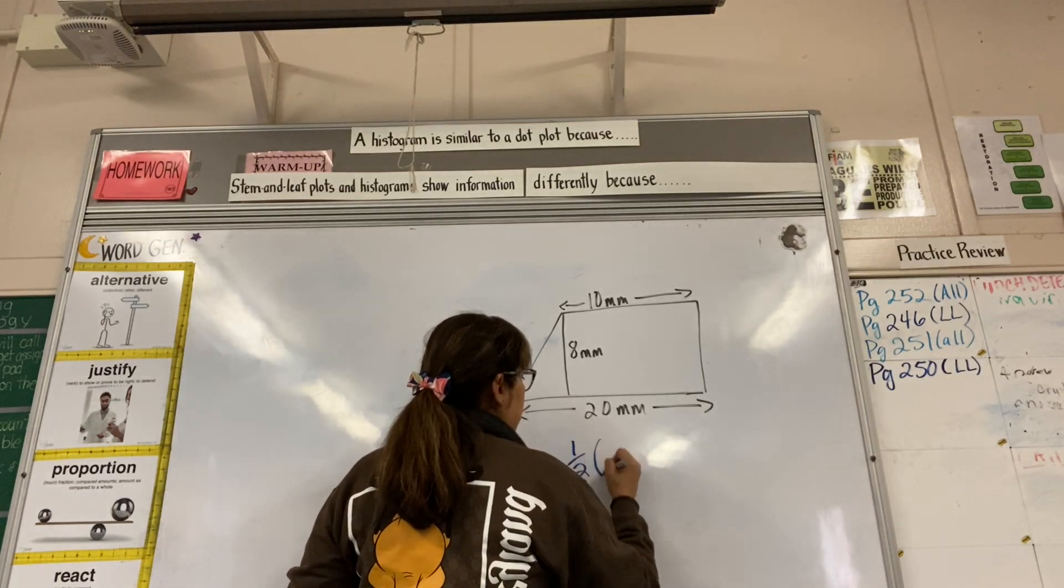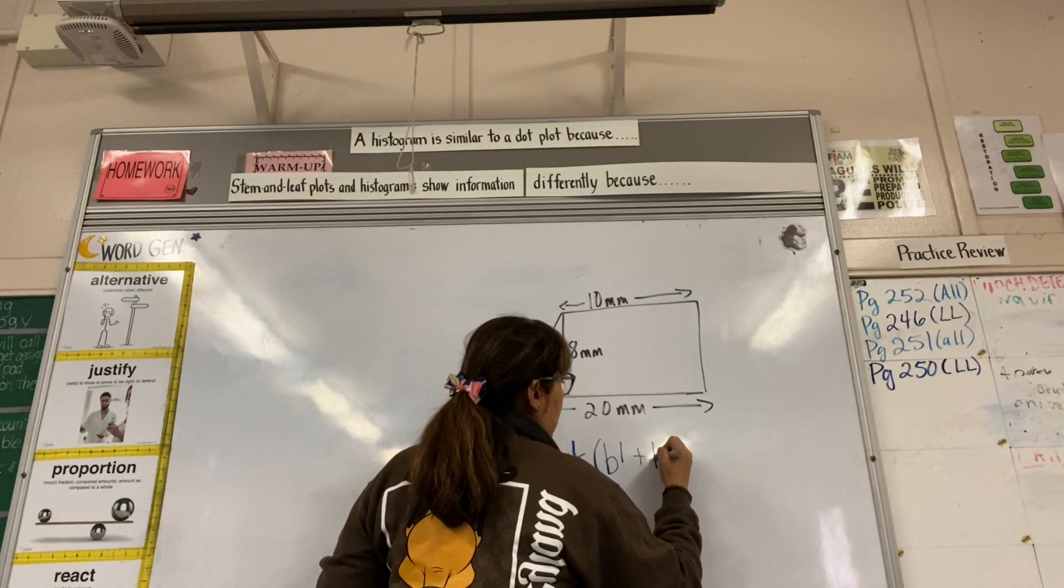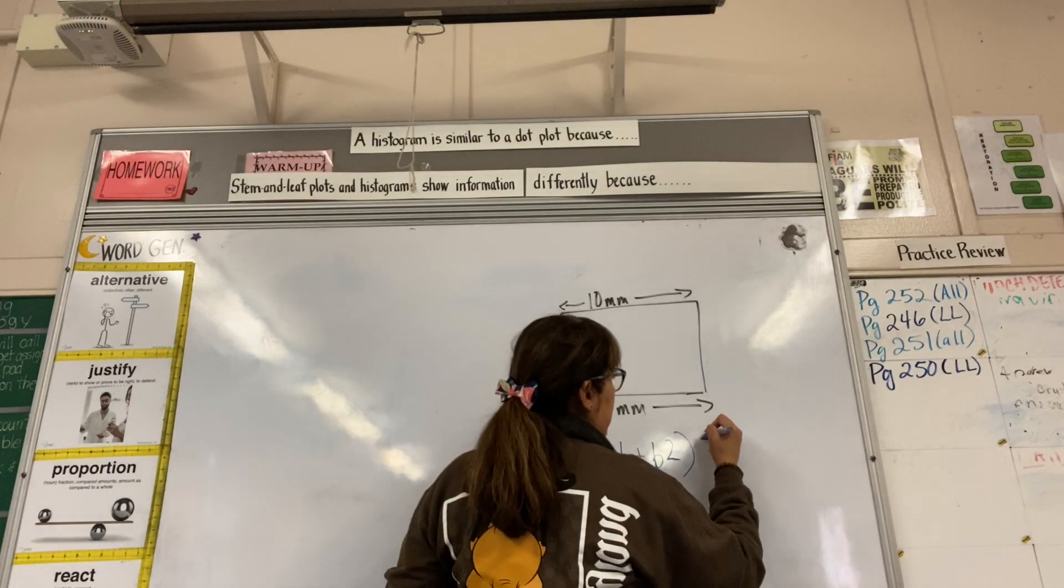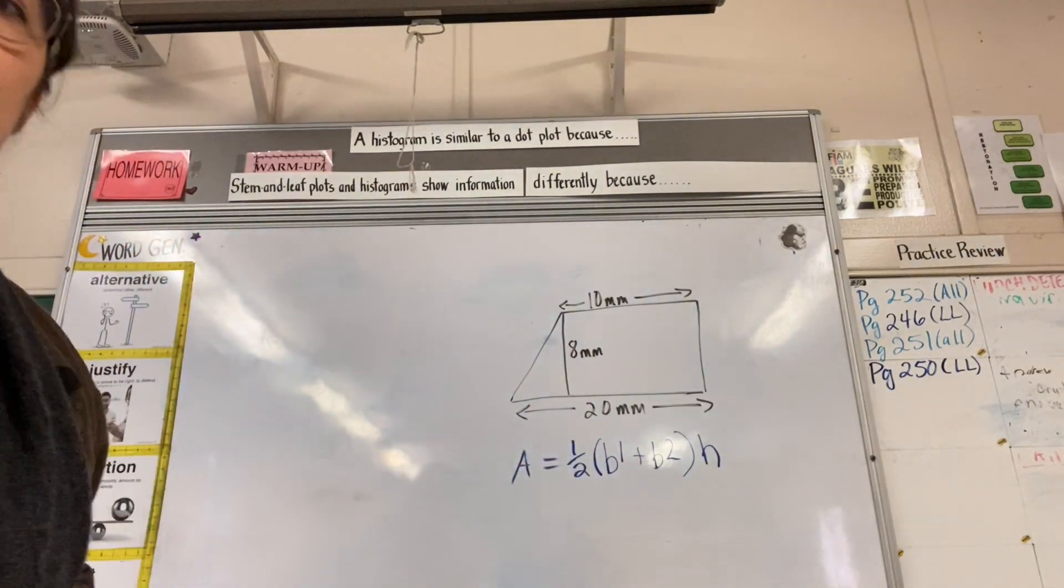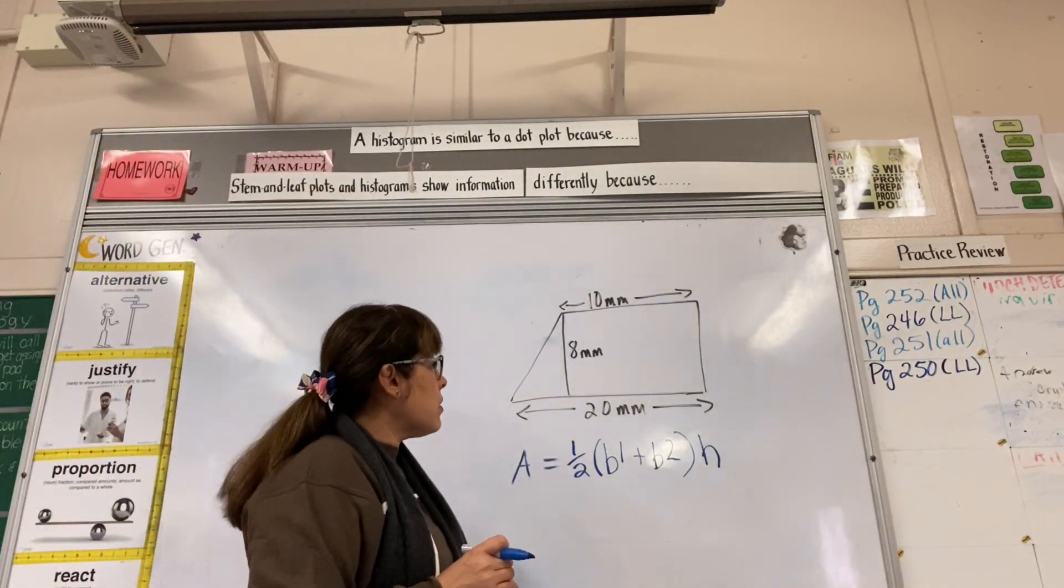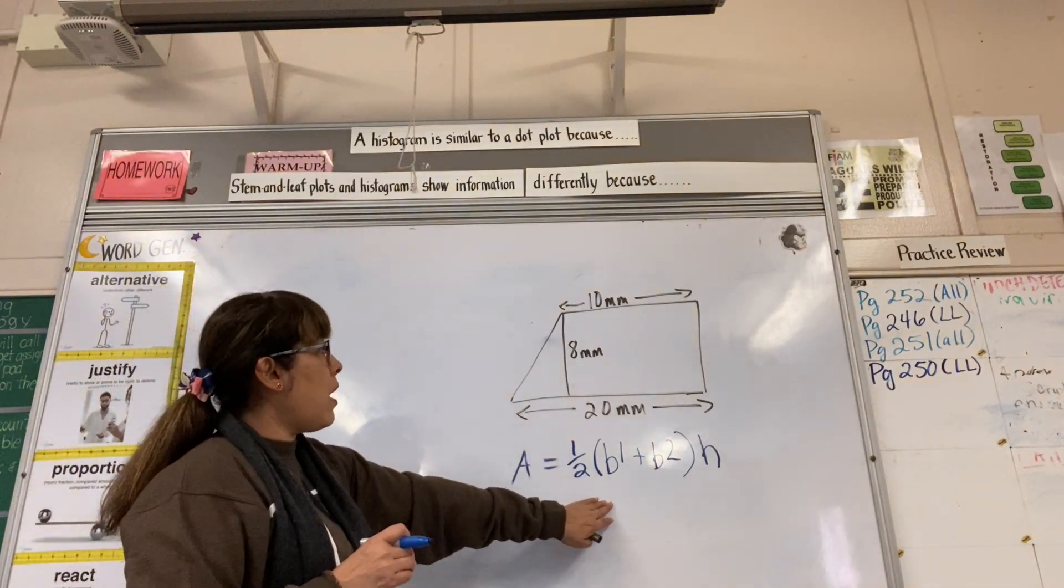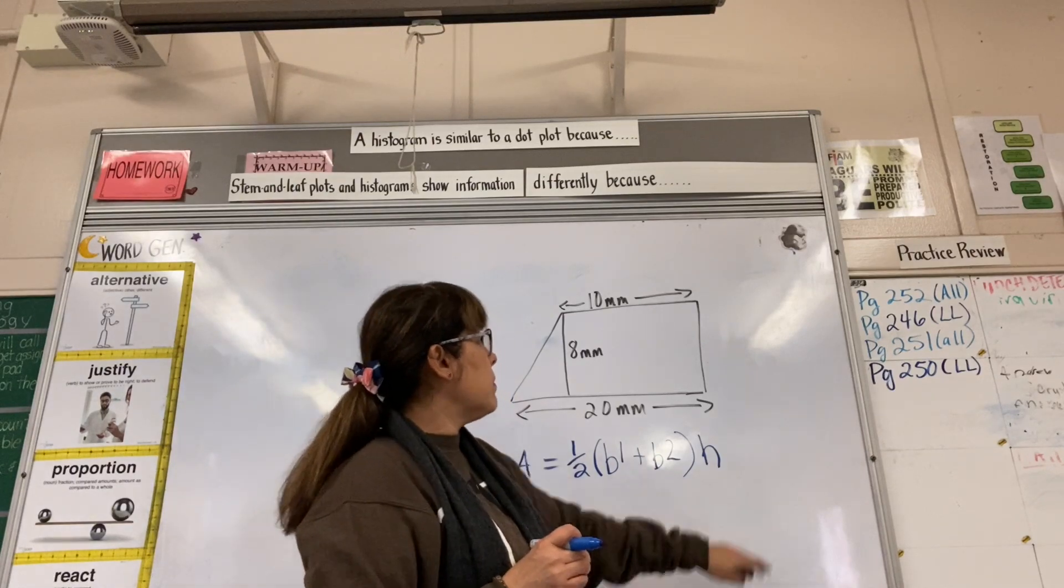The formula is: half times base 1 plus base 2 times the height. So let's get this. What's half the base 1 plus base 2 times the height?